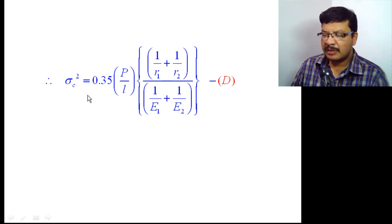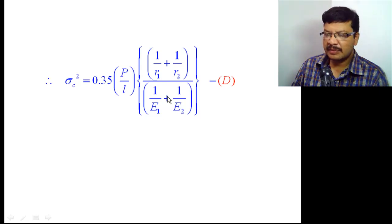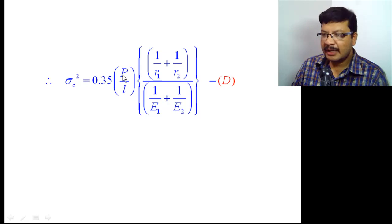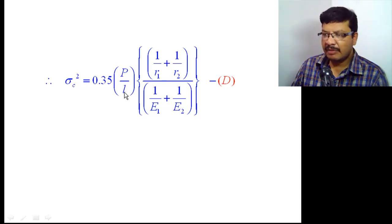This is the final equation for contact stress according to Hertz. In this equation, p is the load acting on the cylinders, l is the length of cylinders, r1 and r2 are the radii of the cylinders, and E1 and E2 are the elastic moduli. To apply this equation for gears, the load acting on the gear teeth is p — that is the resultant load pn — and the length l becomes the face width b of the gear teeth.